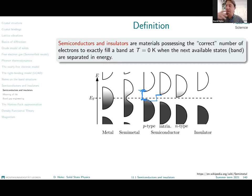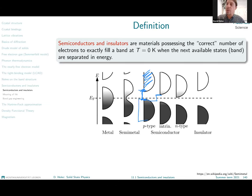The unoccupied bands are called conduction bands, and the highest occupied band is called the valence band.